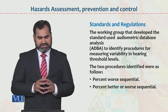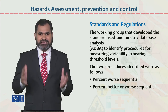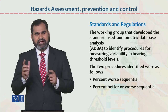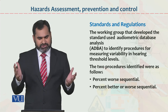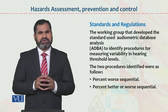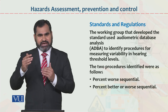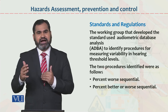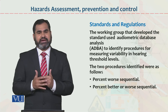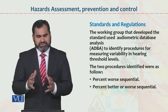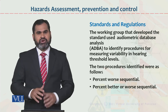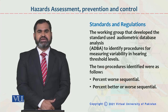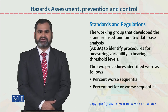Ye dono cheezein bahut important hain. Agar wo cheezein nuksandeh hain, employee job se switch kar jaye ga. Agar wo controllable hain, employee job se switch nahi karega. To ye standards basically organizations ke decision mein bhi employee ko help karti hain, aur yahi cheezein organization culture ko better banane ka bhi baais banti hain. In chizon ko manually dekha jata hai, uske baad employee faisla karta hai ke whether he or she will remain in that organization or not.